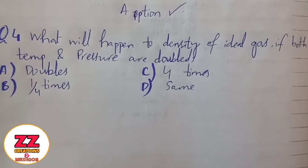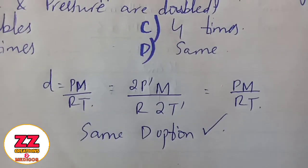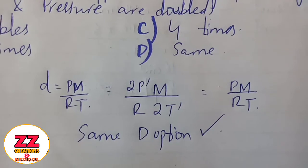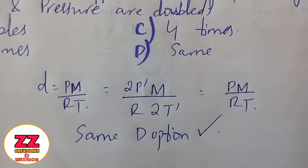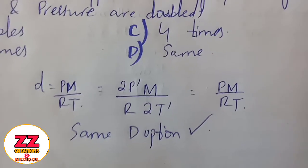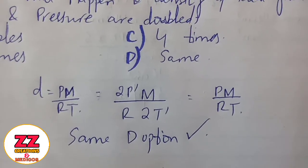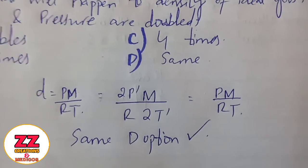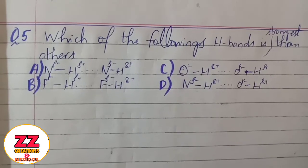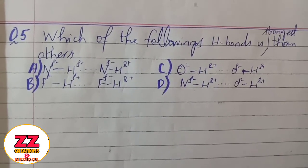Next question: What will happen to the density of an ideal gas if both temperature and pressure are doubled? Using the density formula: density = PM/RT. Since both pressure and temperature are doubled, they cancel out, and there is no difference. Option D — density remains the same.